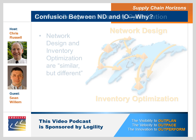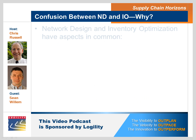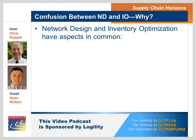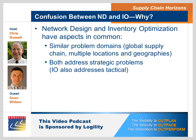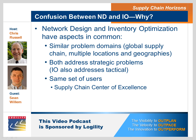Just like you, I run into that confusion all the time, and it's actually quite natural because network design and inventory optimization do share similarities. If we start with the similarities, they both look at a similar problem domain — global supply chains, multiple locations, multiple geographies. They both address strategic problems in the supply chain. Most importantly, they can have the same set of users: the corporate supply chain center of excellence. They have similar user interfaces, looking at a network representation of the supply chain, and they're both focused on cost optimization.